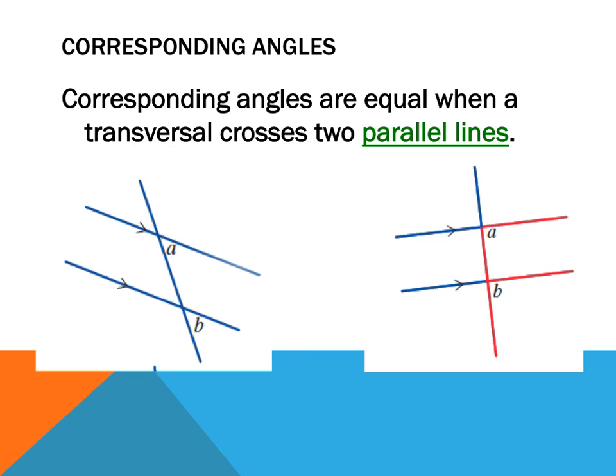The first type of angles that form are corresponding angles. What you need to know is that corresponding angles are equal when a transversal cuts them. It's only when the lines are parallel though, okay? So the lines must be parallel, and corresponding angles form in two particular spots.